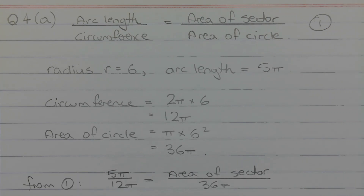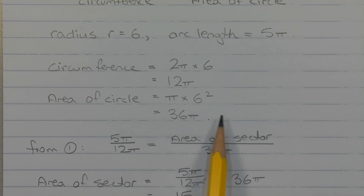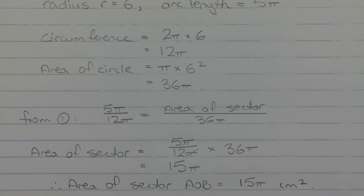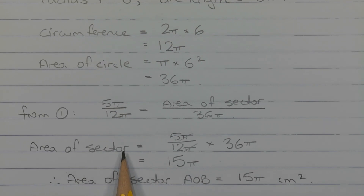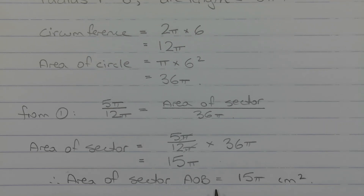From equation number one, 5 pi over 12 pi — arc length over circumference — equals area of sector over the area of the circle, which is 36 pi. Rearranging to make area of sector the subject, we have area of sector equals 5 pi over 12 pi times 36 pi. The pi in the numerator cancels with the pi in the denominator, giving 5 over 12 times 36 pi, which equals 15 pi. Therefore the area of sector AOB is 15 pi square centimetres.